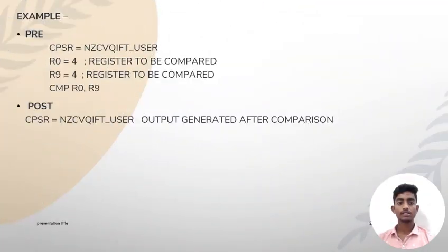An example of comparison instructions. Pre: CPSR=NZCVQIFT_user, R0=4 (register to be compared), R9=4 (register to be compared). CMP R0, R9. Post: CPSR=NZCVQIFT_user, output generated after comparison.